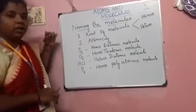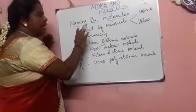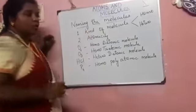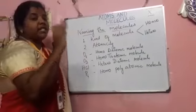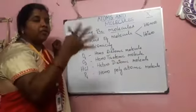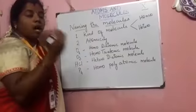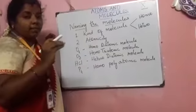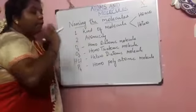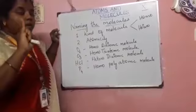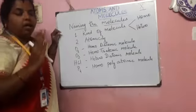In this video, we have to see the naming of molecules. They have given us molecules — a combination of two or more atoms. How do we have to name them? First, we have to find what kind of molecule it is.